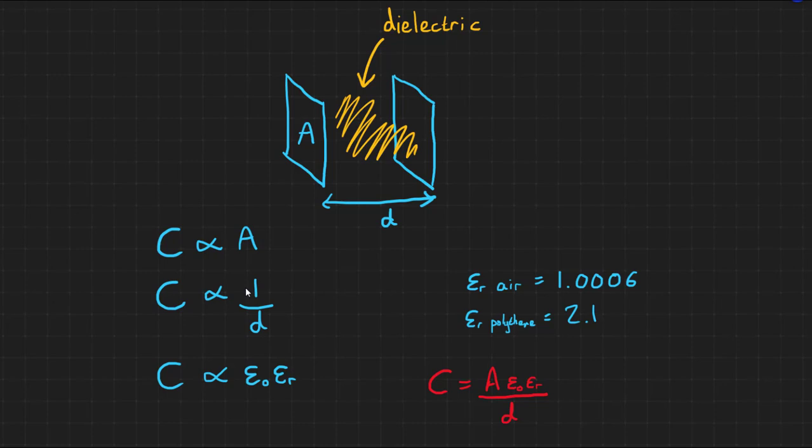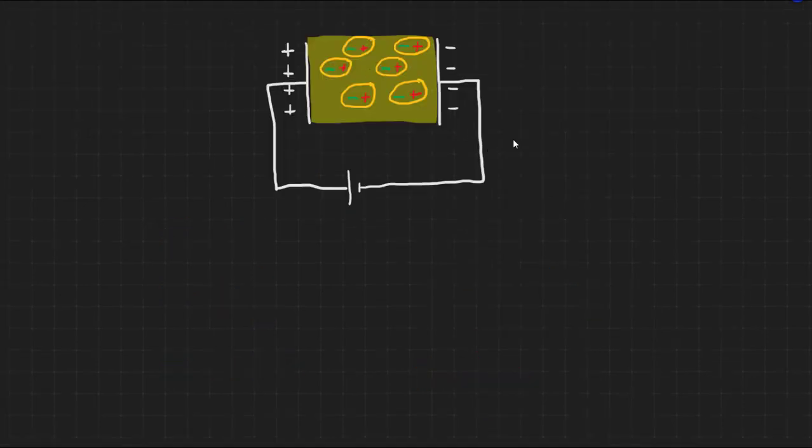But how does this work? Consider a molecule in the dielectric material placed in this electric field. The electric field will polarize the molecules, pulling their electrons towards the positive plate. This means the dielectric molecules are now aligned in such a way that they actually increase the capacitance.